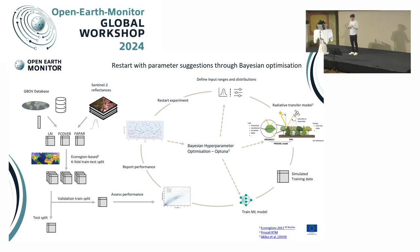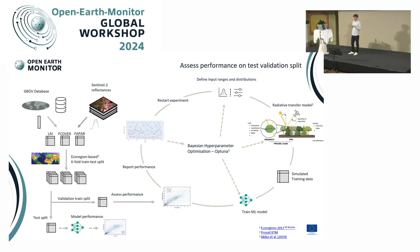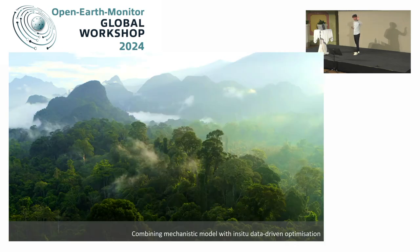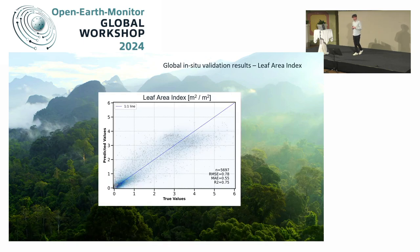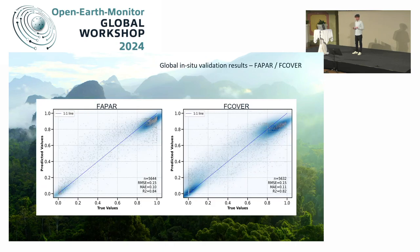You do this for a couple of thousand iterations, and then you end up with a model. You can use your test split of the validation data to assess performance — how would our model perform in an unseen ecoregion? We have around five and a half thousand observations for leaf area index. You can see the true values against the predicted values, and similarly for FAPAR or fractional cover, you can assess how well you generalize to an unseen ecoregion.